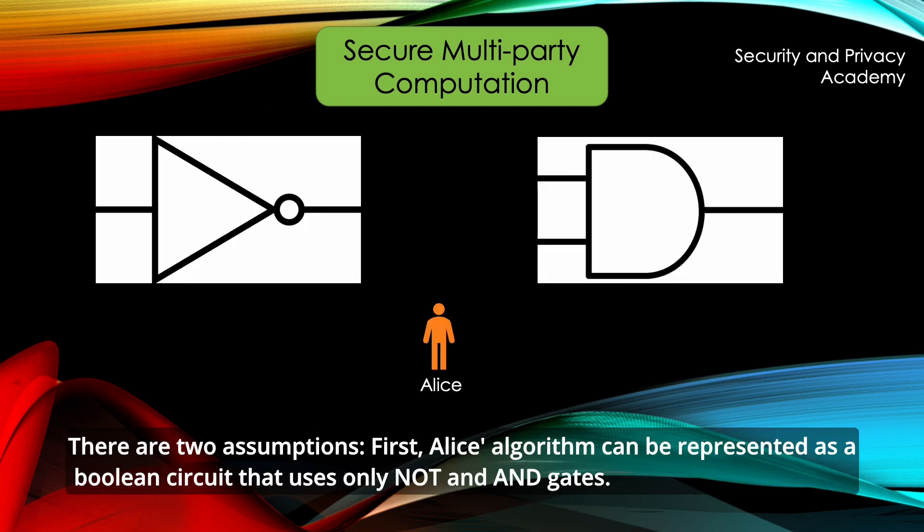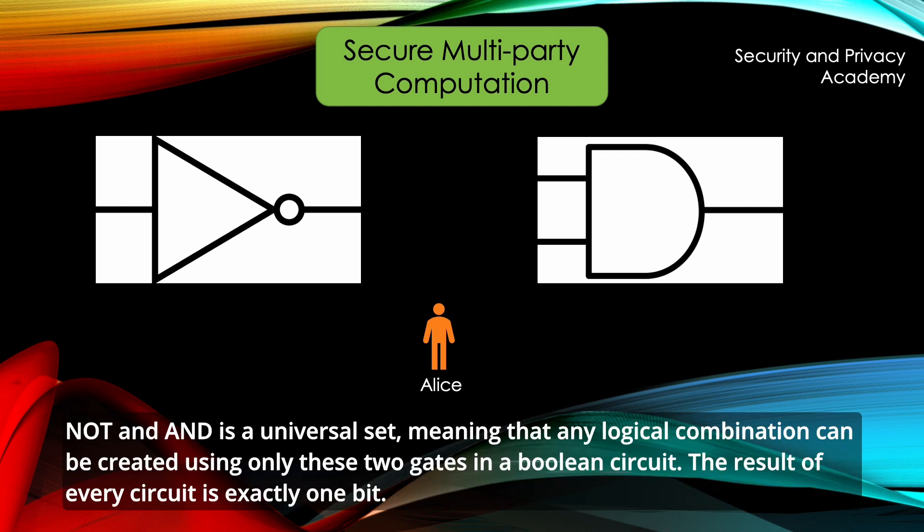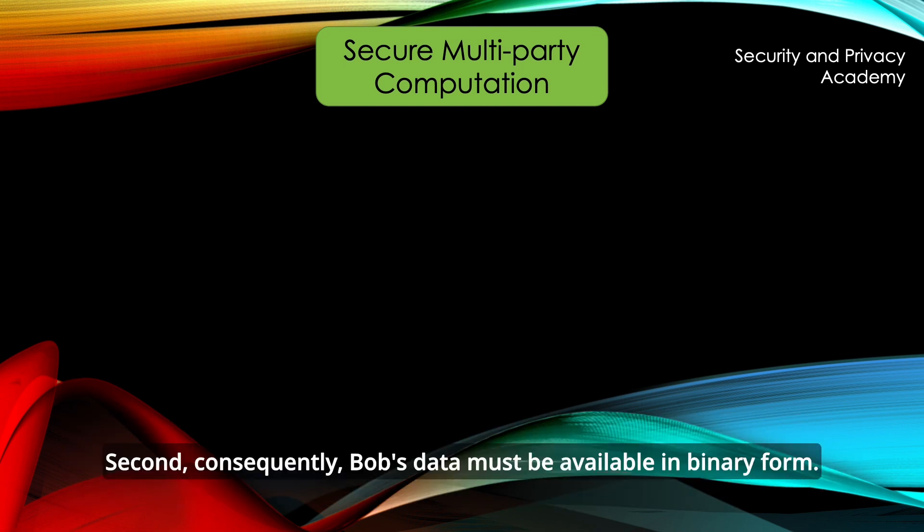There are two assumptions. First, Alice's algorithm can be represented as a boolean circuit that uses only NOT and AND gates. NOT and AND is a universal set meaning that any logical combination can be created using only these two gates in a boolean circuit. The result of every circuit is exactly one bit.